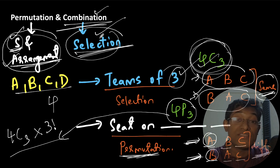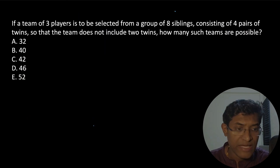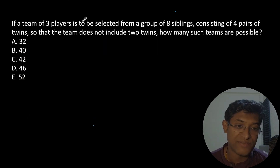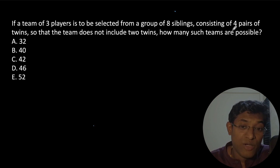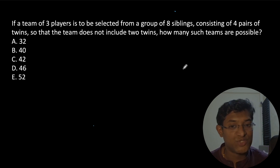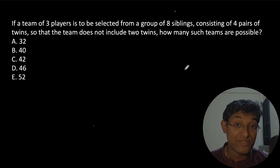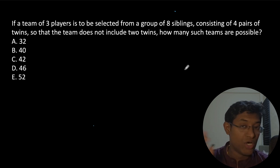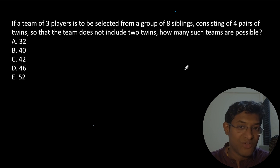Now let's quickly apply this in a question. The question is: if a team of three players is to be selected from a group of eight siblings consisting of four pairs of twins, so that the team does not include two twins, how many such teams are possible? Pause the video, give it a try, and then let's take a look at this question together. Our main goal is not just to solve this question but to be sure that we understand the difference between permutation and combination.